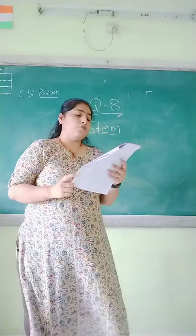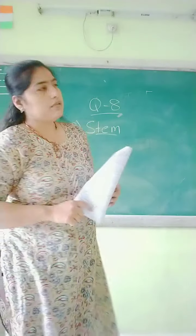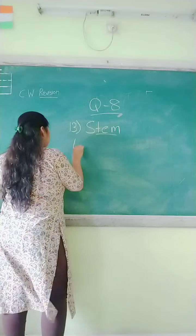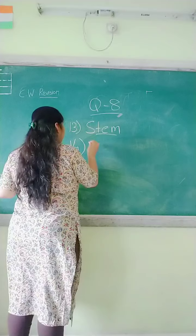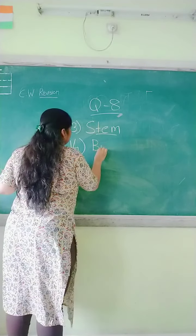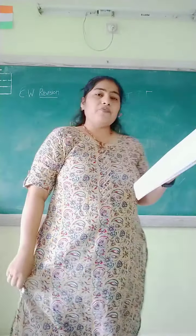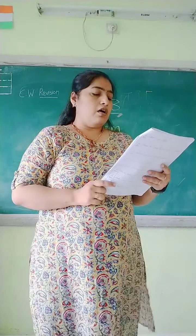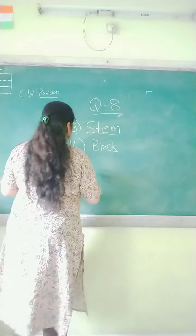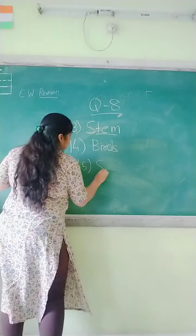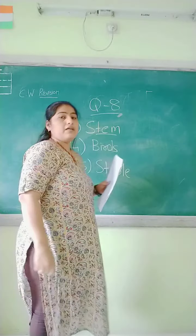Fourteenth: animals that have wings and a beak — these are birds. Fifteenth: a horse lives in a stable. So horse lives in a stable.